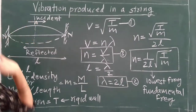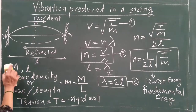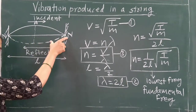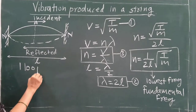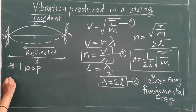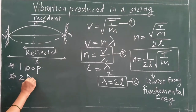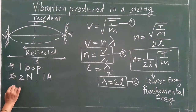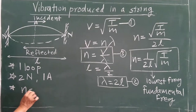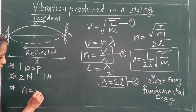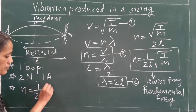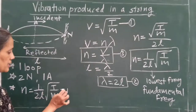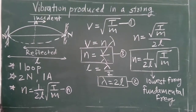So in the fundamental mode, the important points to note are: the string vibrates along its length with the formation of one loop. In that one loop, two nodes are formed at the rigid supports and one antinode is formed at the center. Due to that, the string vibrates with fundamental frequency n = 1/(2l) × √(T/m). This is the fundamental frequency by which the string vibrates.